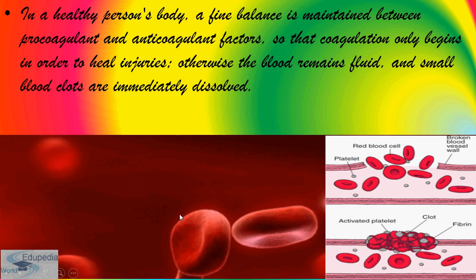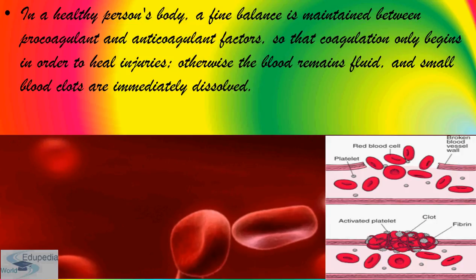Blood coagulation is controlled by a signaling cascade consisting of 13 coagulation factors which interact and activate each other. At the end of the coagulation cascade, fibrinogen is converted into fibrin. A network of fibrin fibers reinforces wound enclosure. Platelets and other blood cells get caught in this network, thus forming a blood clot, also known as a thrombus.